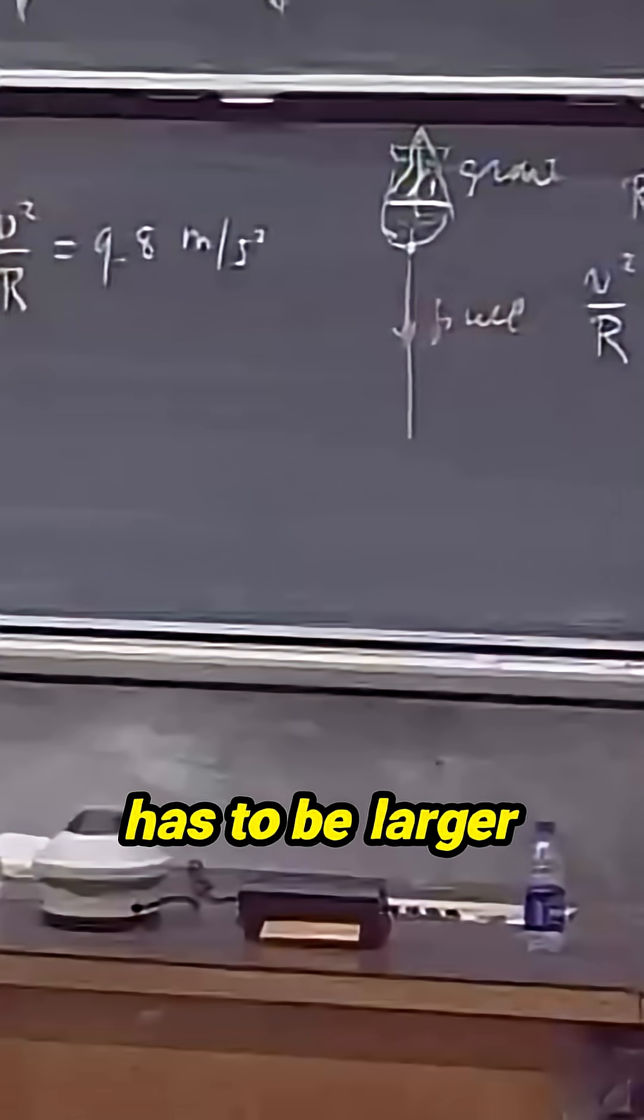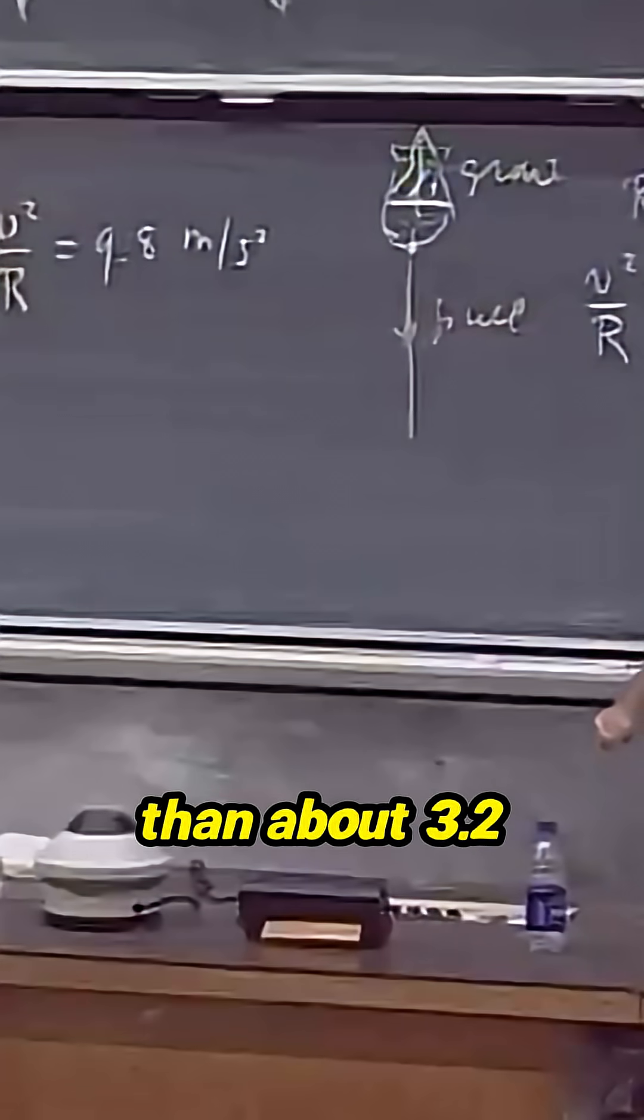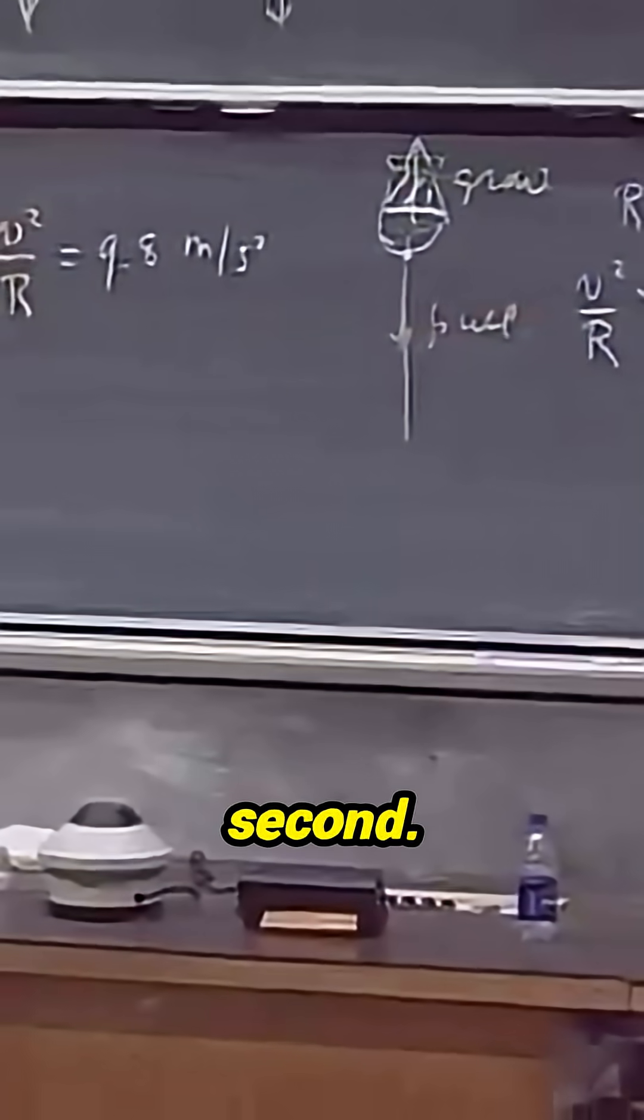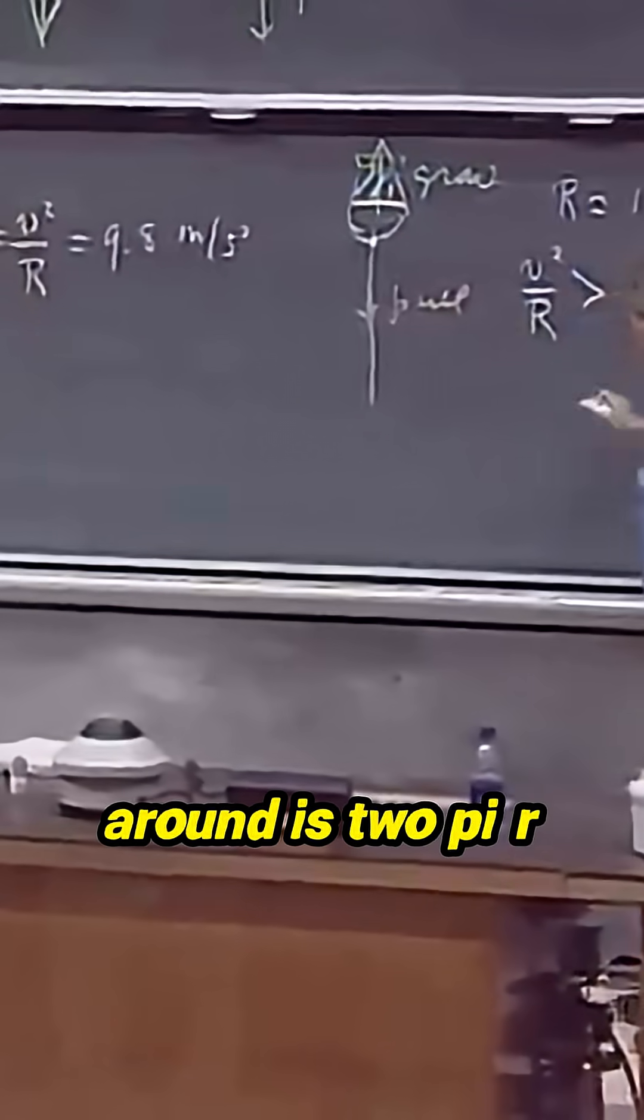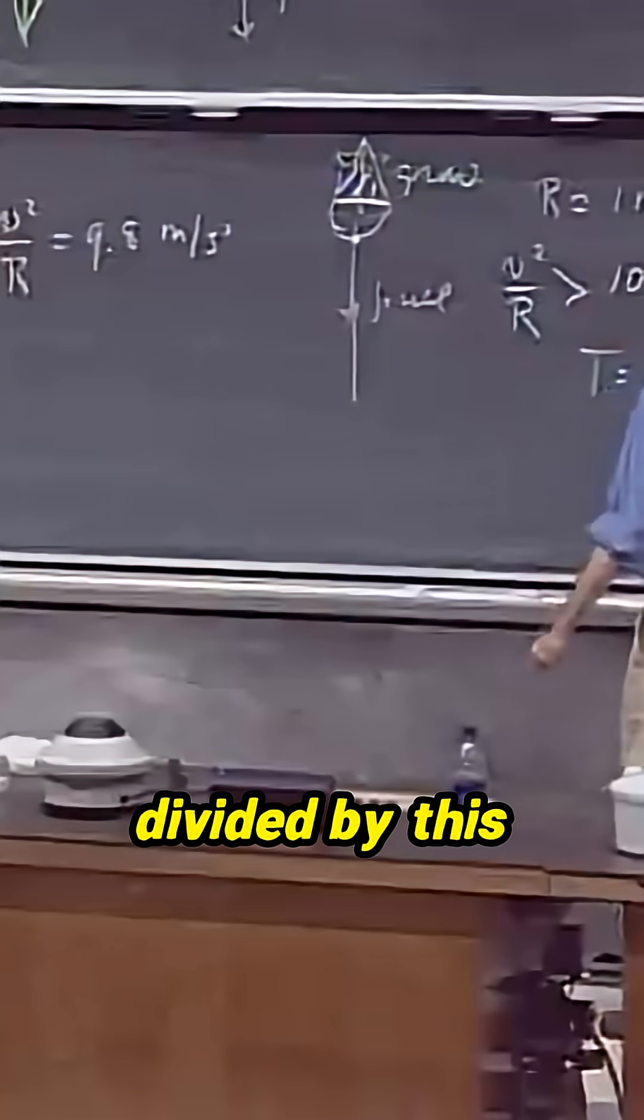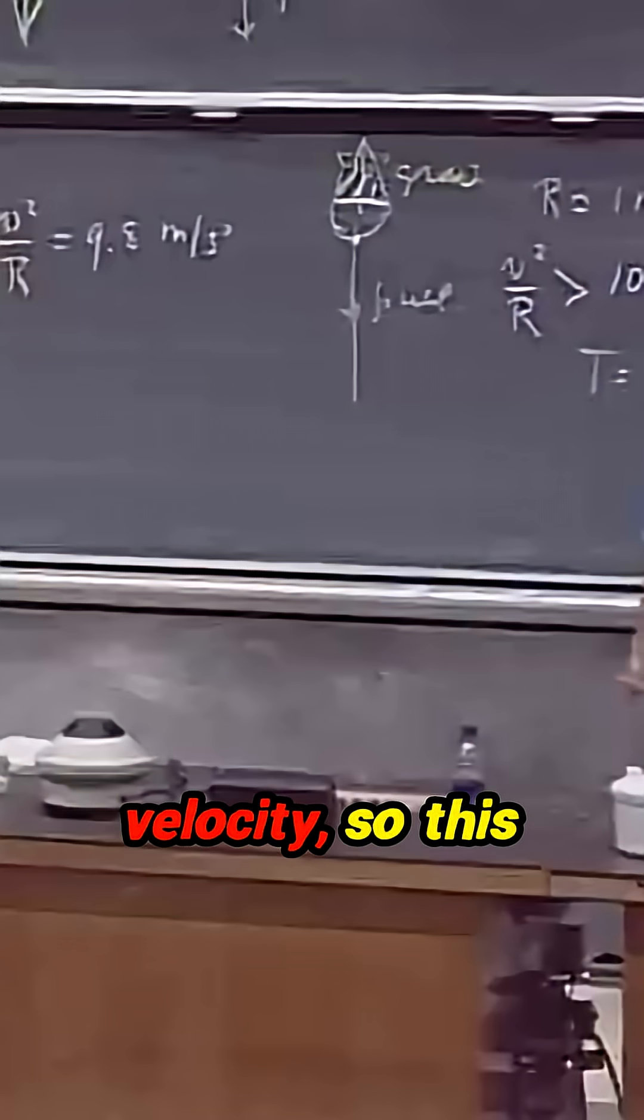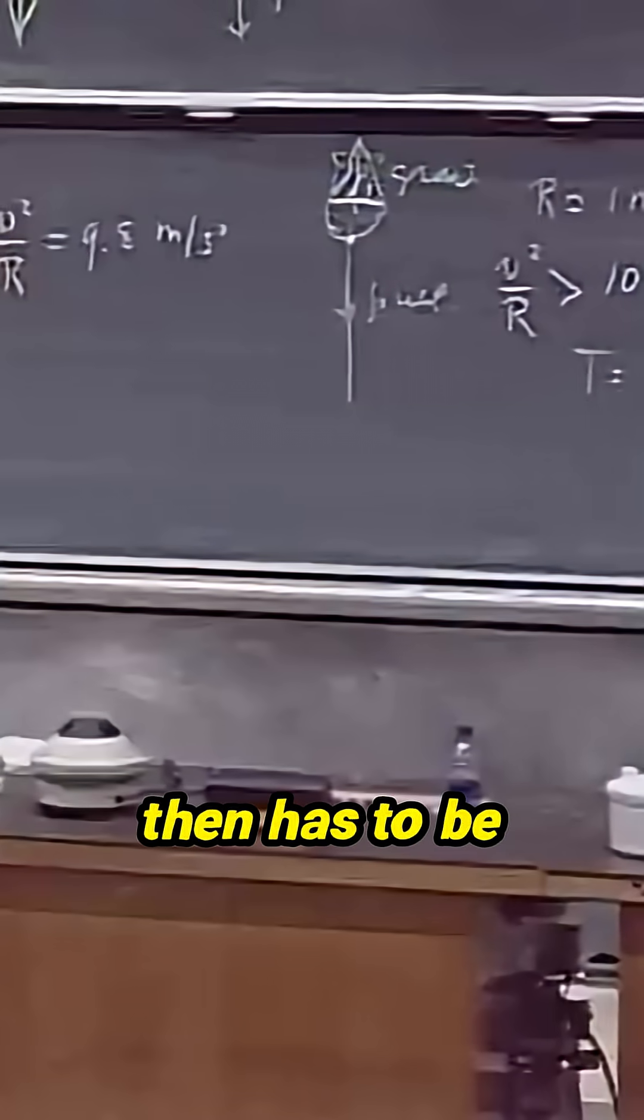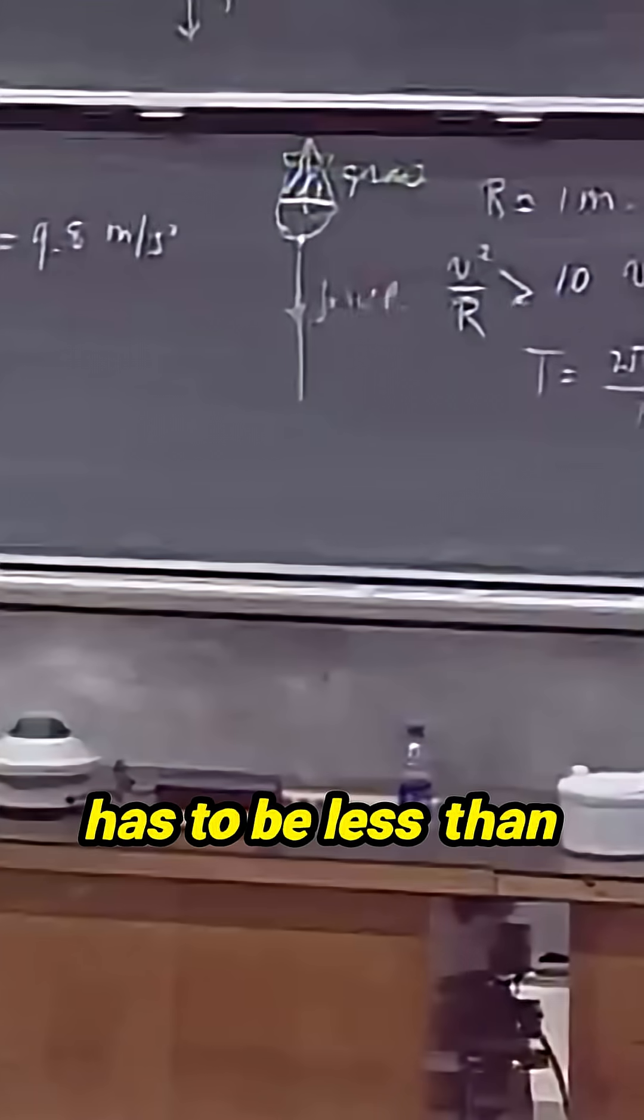So that means v has to be larger than about 3.2 meters per second. The time to go around is 2 pi r divided by this velocity, so this time to go around then has to be less than two seconds.